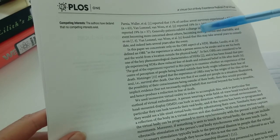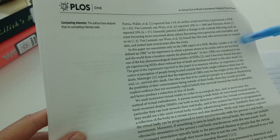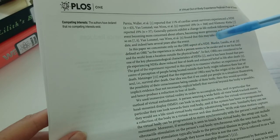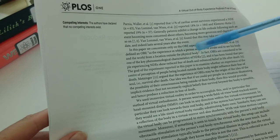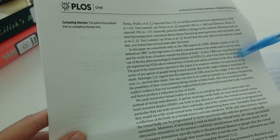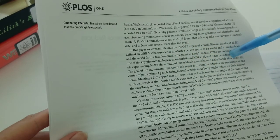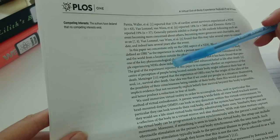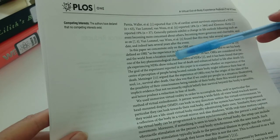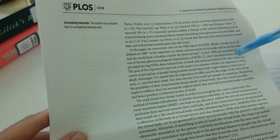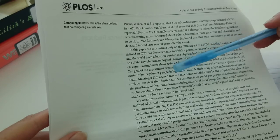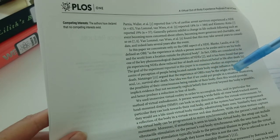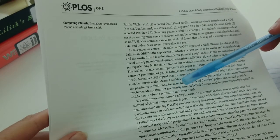Blink Landis defined an OBE as the experience in which a person seems to be awake and to see his body and the world from a location outside the physical body. OBEs are considered to be one of the key phenomenological characteristics of NDEs, and it has been found that people experiencing NDEs showed reduced fear of death and enhanced belief in life after death. The goal of the experiment reported in this paper is to examine whether an experience of the center of perception of people being located outside their body might influence their fear of death.